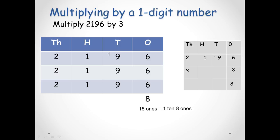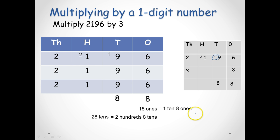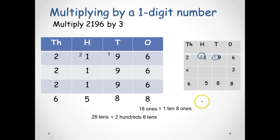Now we multiply 9 tens by 3 — we would have 27 tens, plus 1 ten gives 28 tens, which is 2 hundreds and 8 tens. Our hundreds: 100 multiplied by 3 gives 3 hundreds, plus 200 is 500. Now we multiply the 2 thousands by 3, which gives us 6,000. So 2,196 multiplied by 3 is 6,588.